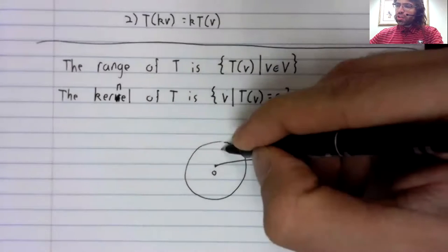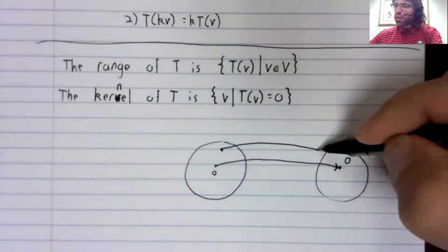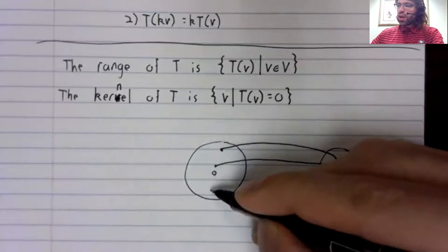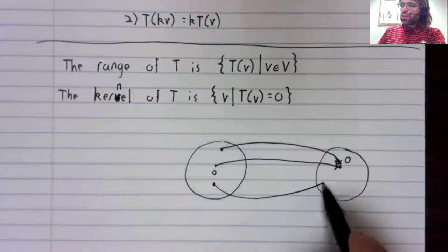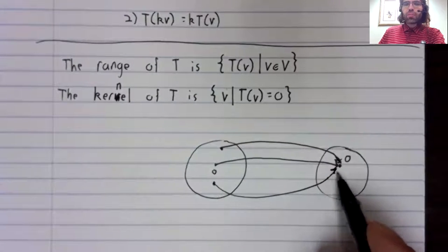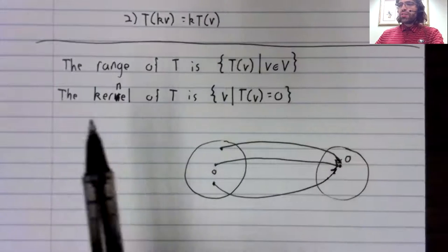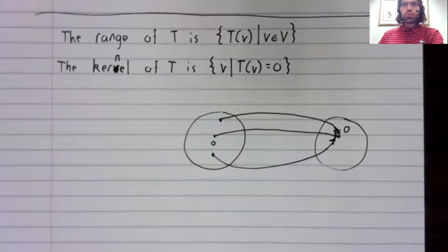But unless the function is one to one, there could be other elements in the domain that are mapped to the zero vector. And the set of all of these elements is called the kernel.